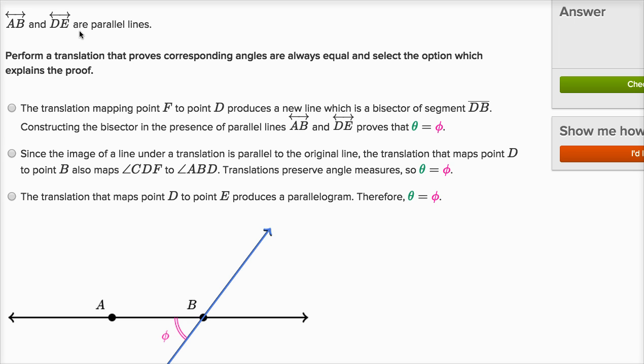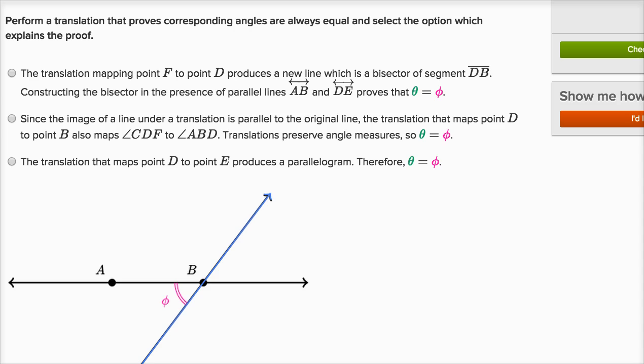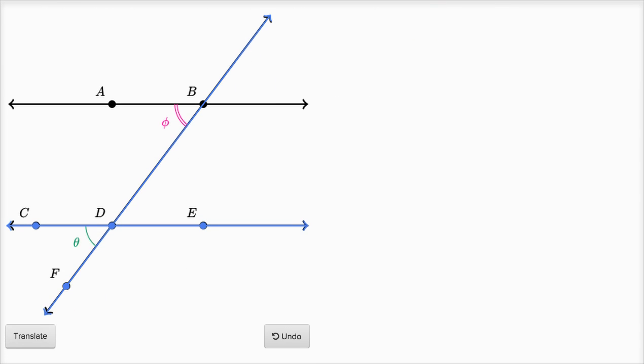So let's look at what they're telling us. It says line AB and line DE are parallel lines. Perform a translation that proves corresponding angles are always equal and select the option which explains the proof. So let's see what they have down here. They've picked two corresponding angles here. You see this is the bottom left angle, this phi, and then theta right here is the bottom left angle down here.